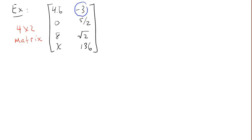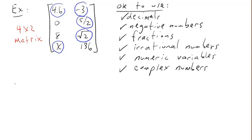Notice that I've used a negative number, a decimal, a fraction, an irrational number, and even a variable. These are all okay to use in a matrix. It's even okay to use complex numbers, which are common in more advanced treatments of linear algebra.